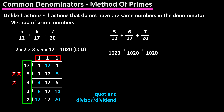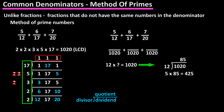If we go back to our beginning fractions, we need to convert them so they all have 1,020 in their denominators. For the first fraction, 5 over 12, in order to get 1,020 in the denominator, we divide 1,020 by 12 to find the multiplier, which is 85. Next we multiply the numerator of 5 by the same value of 85, which equals 425. So our new fraction is 425 over 1,020. Note: 5 over 12 is the same value as 425 over 1,020.